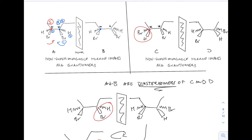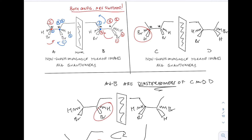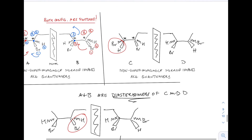Now looking at compound B, I did the blue dot first — that blue carbon is now on the left. We have the same priority assignments, but now the rotation is to the left, which is counterclockwise, giving us the S configuration — opposite of compound A's blue carbon. Then doing the red carbon, we get a clockwise rotation giving R configuration. So in compounds A and B, comparing blue to blue and red to red, both configurations are switched: blue went from R to S, and red went from S to R. That is by definition an enantiomer pair.